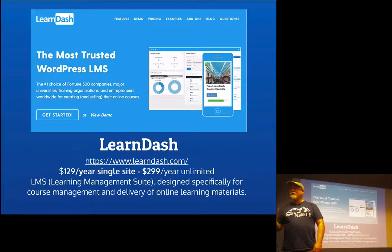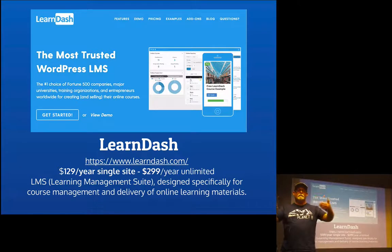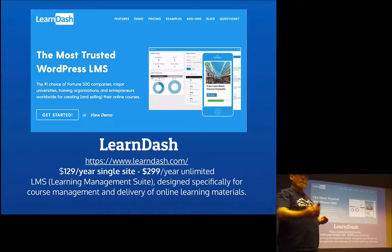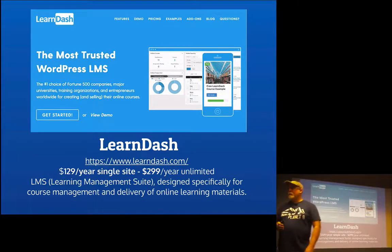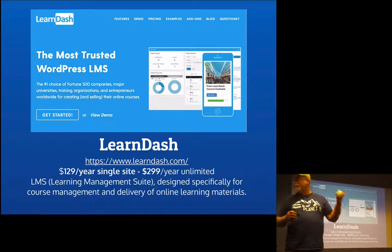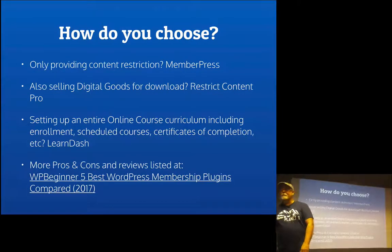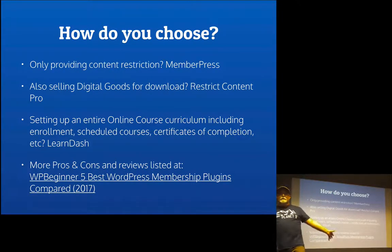If you're doing course management of any kind, this is hands down the best plugin for that — it's called LearnDash. It's a learning management system, or LMS, designed specifically for creating courses with drip content: you get the content for the next course after you finish the current one. It has student enrollment, certificates, and built-in forums for community communication. It's $129 a year for a single site or $300 a year for unlimited — and USF uses it.